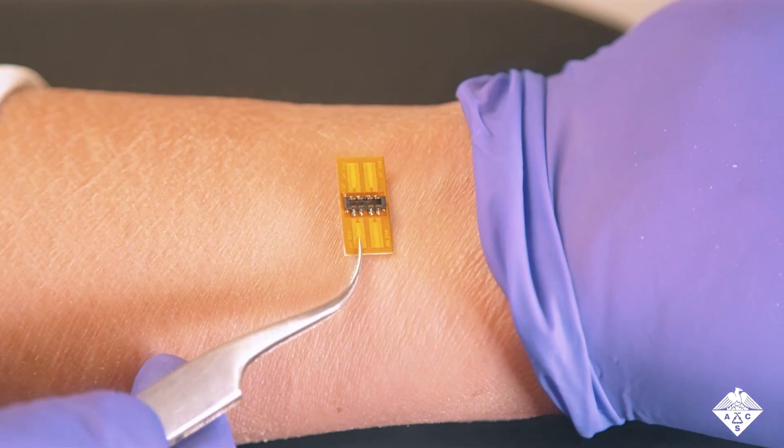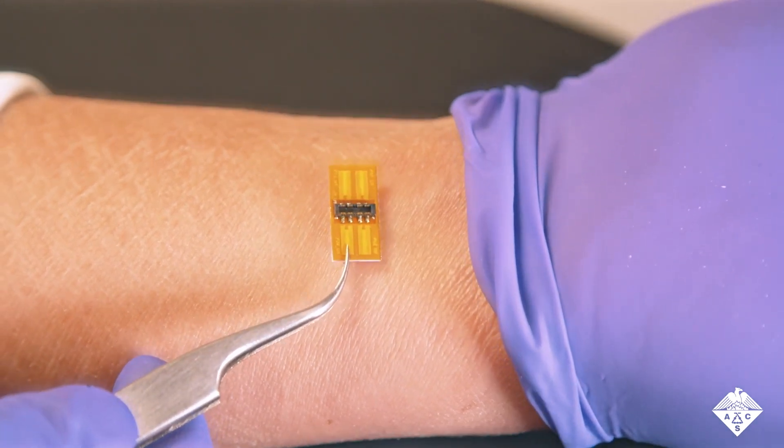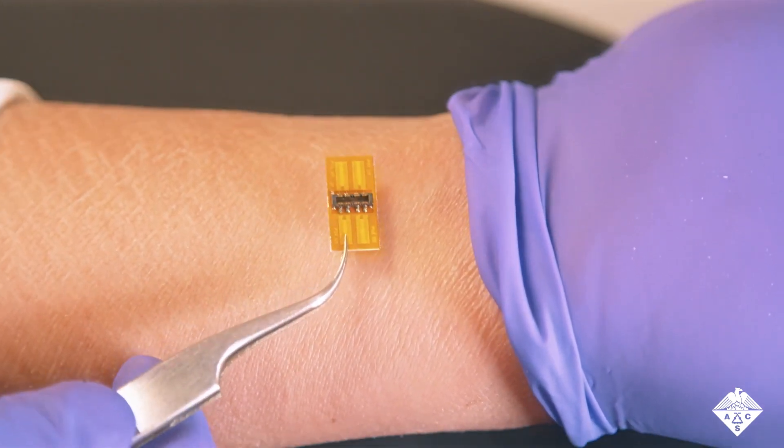The device can continuously track cytokine levels in sweat for up to 168 hours before the sensor strip needs to be replaced.